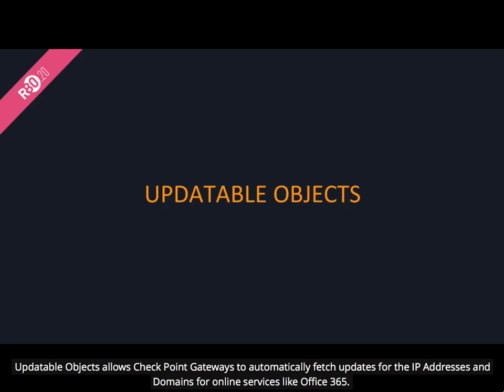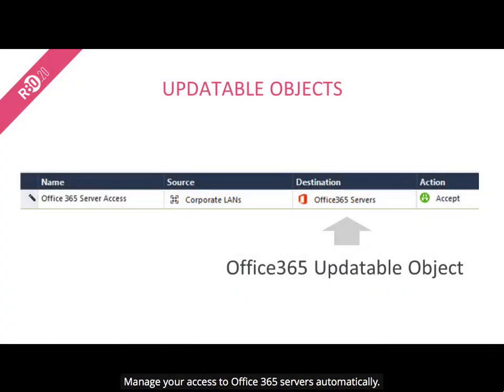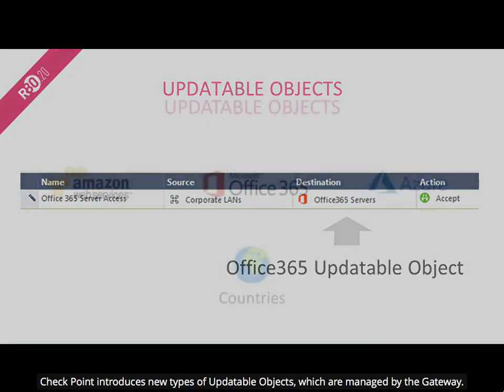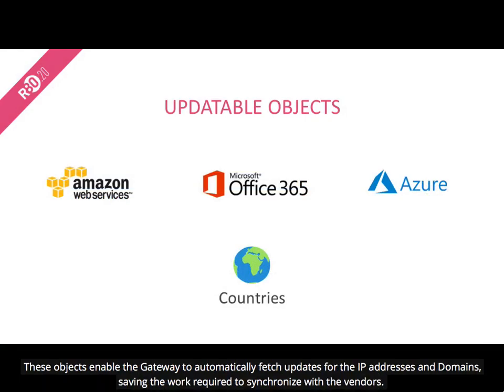Updatable Objects allows Checkpoint gateways to automatically fetch updates for the IP addresses and domains for online services like Office 365. Checkpoint introduces new types of updatable objects which are managed by the gateway, enabling the gateway to automatically fetch updates for IP addresses and domains, saving the work required to synchronize with the vendors.